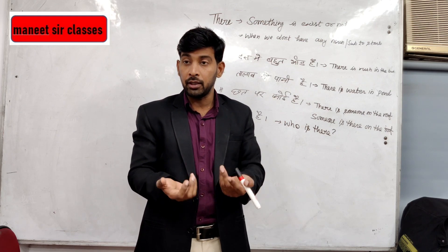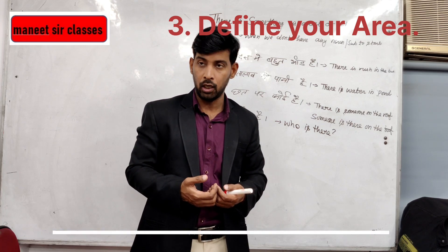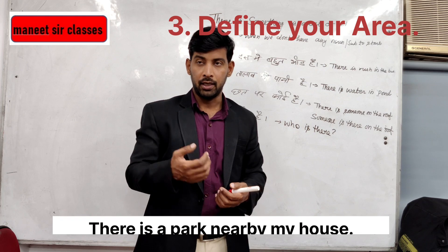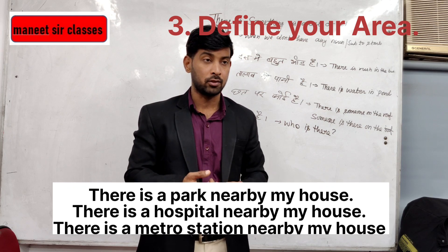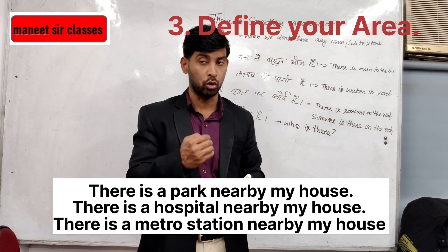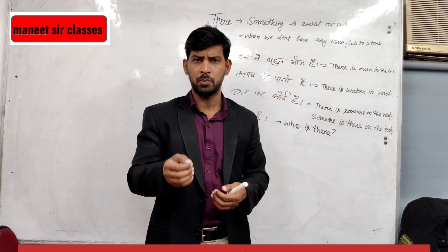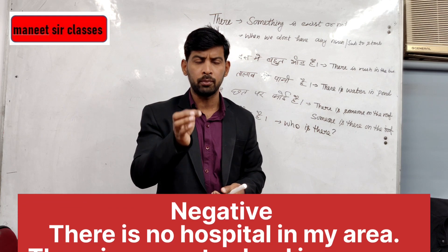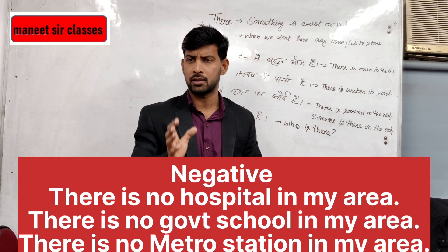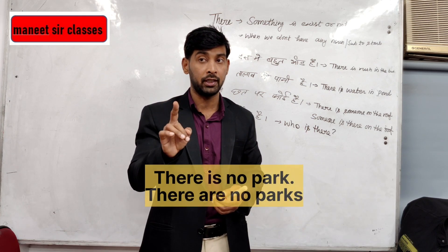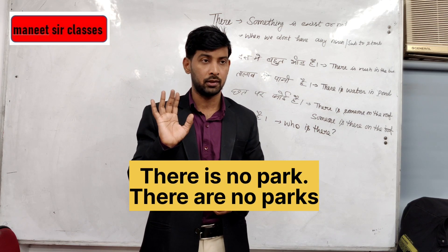If there is a chair - singular; there are two or four chairs - plural. 'There are two lights, there is a fan.' I can also talk about my area: 'There is a park nearby my house', 'There is a hospital nearby my house', 'There is a metro station nearby my house.' For negative sentences I use 'no': 'There is no facility in my area', 'There is no hospital in my area', 'There is no government school in my area.'